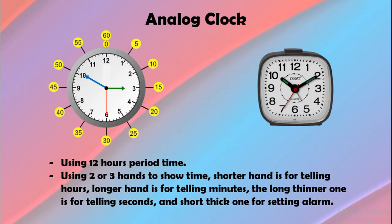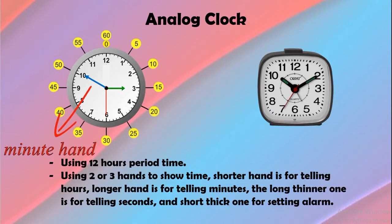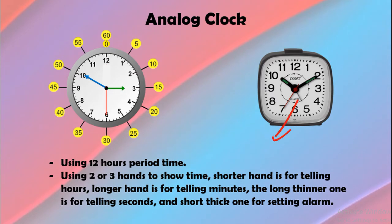Ciri umum jam analog: Pertama, menggunakan periode waktu 12 jam, sehingga angka penunjuk waktunya menggunakan angka 1–12. Kedua, jam analog menggunakan 2–3 jarum jam untuk menunjukkan waktu — jarum pendek untuk menunjukkan jam, jarum panjang untuk menunjukkan menit, dan jarum panjang lebih tipis untuk menunjukkan detik. Untuk beberapa jenis jam analog, ada juga jarum pendek tipis yang berfungsi untuk menyetel alarm.